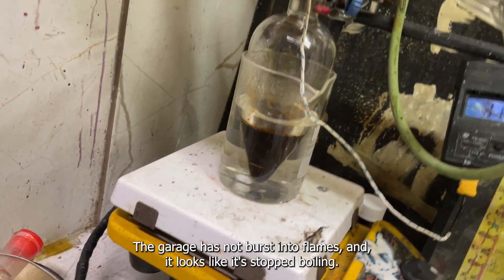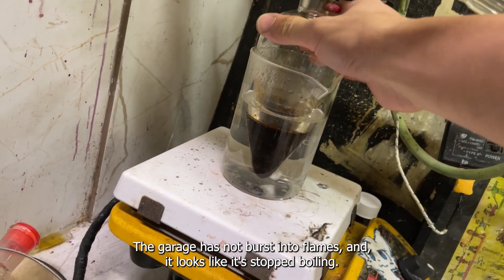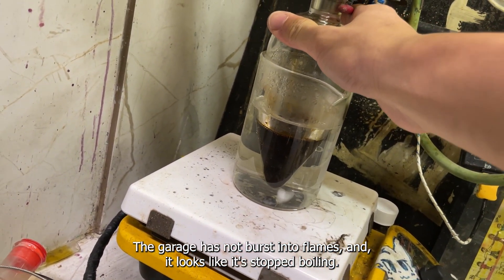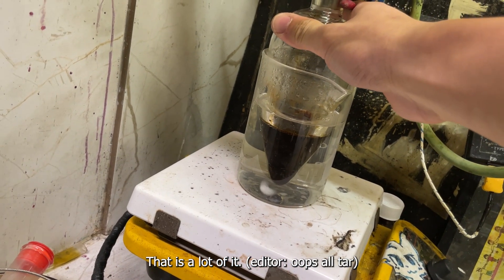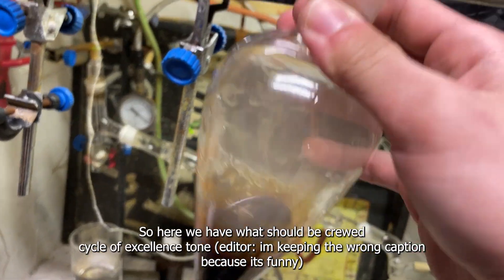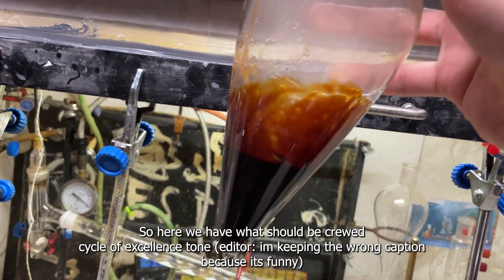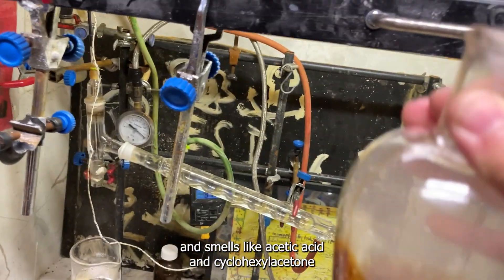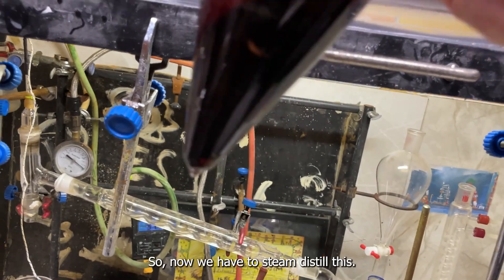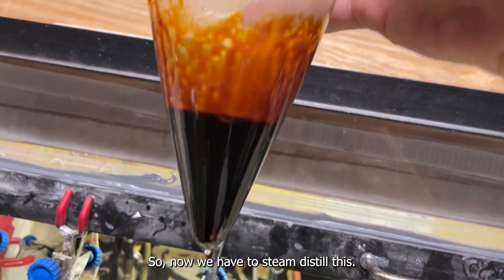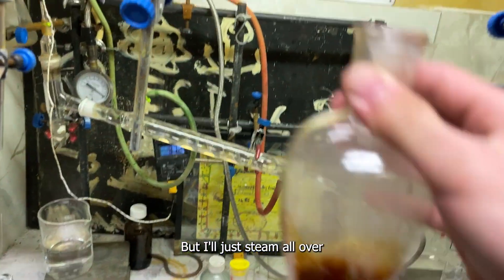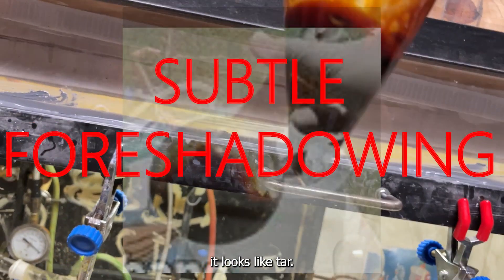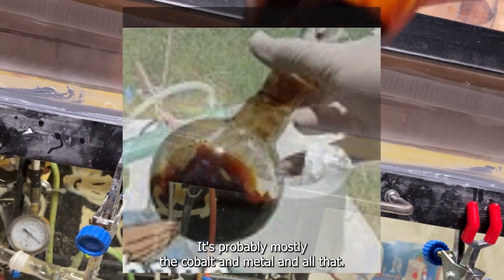Okay it's been about three hours, the garage has not burst into flames, and it looks like it's stopped boiling. I think this is our crude cyclohexyl acetone, that is a lot of it. Here we have the crude cyclohexyl acetone and it smells like acetic acid and cyclohexyl acetone. Now I have to steam distill this. There's probably still some acetic acid in there but I'll just steam this all over. It looks like tar, it's probably mostly cobalt metal and all that.